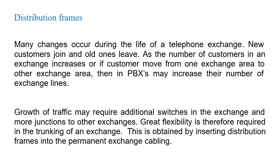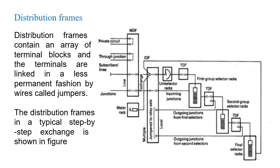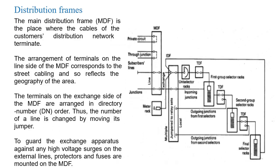Great flexibility is therefore required in the trunking of an exchange. This is obtained by inserting distribution frames into the permanent exchange cabling. Distribution frames contain an array of terminal blocks, and the terminals are linked in a less permanent fashion by wires called jumpers. The distribution frames in a typical step-by-step exchange are shown in the figure.